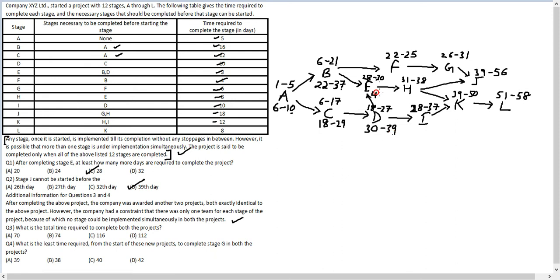For project 2, stage E has constraints at days 30, 37, and 39, so it starts on day 40 and goes to day 42. Stage F has constraints at days 25 and 37, so it starts on day 38 and goes to day 41. Stage H has constraints at days 42 and 38, so it starts on day 43 and goes to day 58. Stage I has constraints at days 37 and 39, starting on day 40 and going to day 49. Stage G has constraints at days 41 and 31, starting on day 42 and going to day 47.